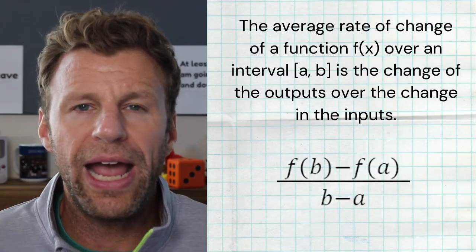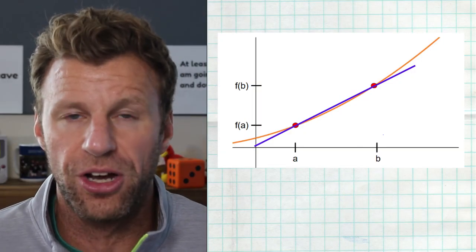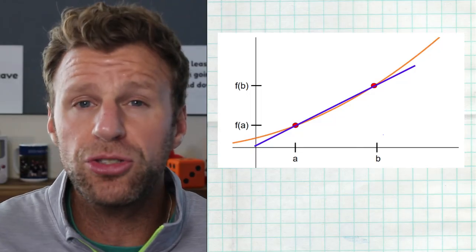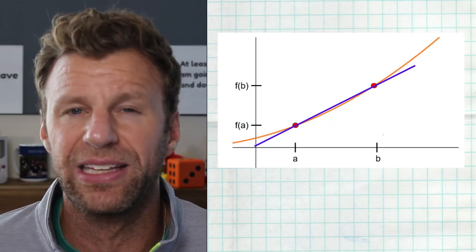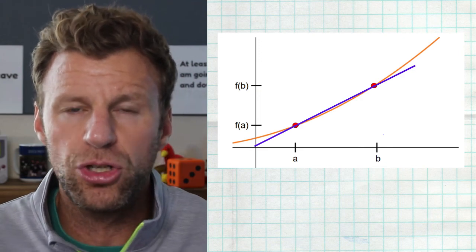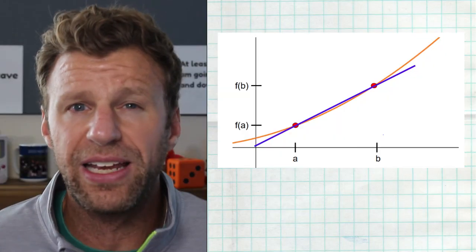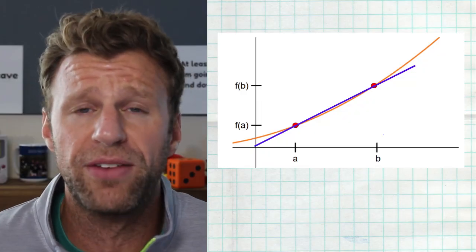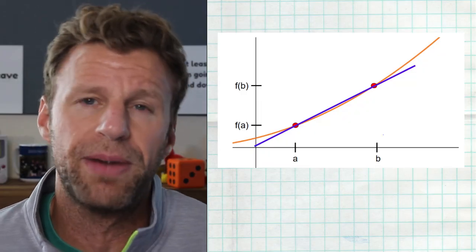This is the simple slope formula you've probably been working with since seventh or eighth grade. Functions aren't all lines — they go up, down, and curve around. So we have a function with two points, point A and point B. If we connect those two points, we have a line called a secant line. Finding the average rate of change between two points is finding the slope of the secant line that connects them — the difference of outputs divided by the difference of inputs.